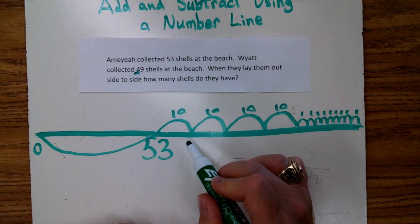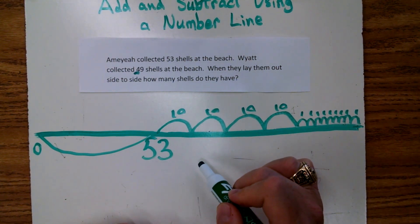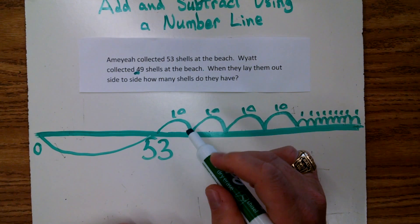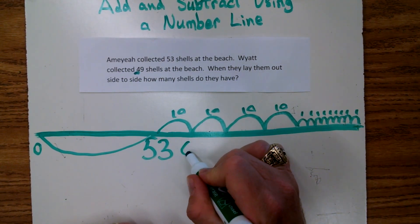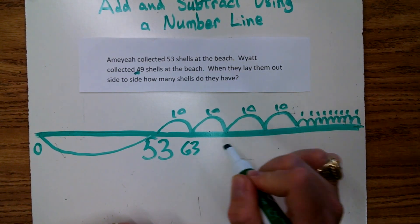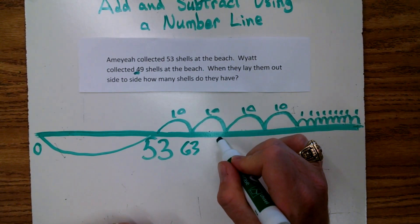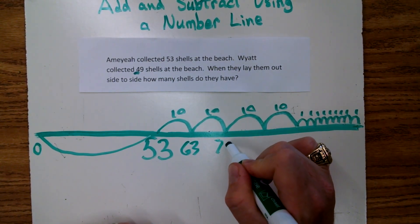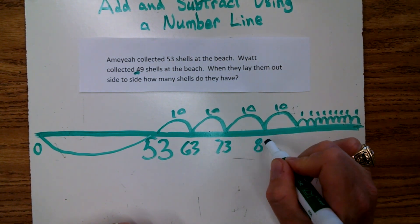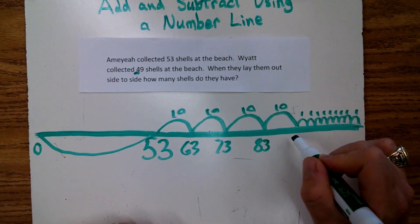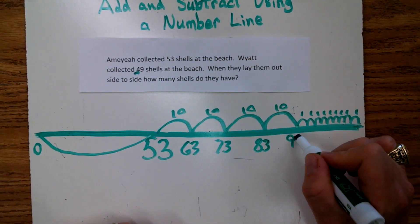Now let's count up from there. 53, and 10 more is 63, and 10 more is 73, 83, 93.